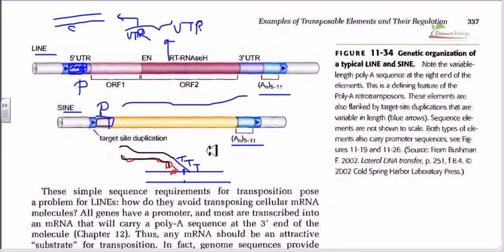But there is a difference between LINE and SINE, only in the middle region, or what we call the coding region. This coding region consists of several genes which code for some proteins which are necessary for transposition. Now in LINE, or Long Interspersed Nuclear Element, there are two different reading frames: one is ORF1 (Open Reading Frame 1), another one is Open Reading Frame 2.